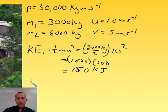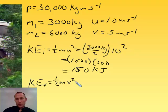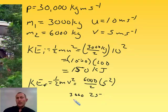Now let's compare that to the final kinetic energy. Same equation except here we have a new mass and a new velocity. And so now our mass is 6,000 and our velocity is 5. And so we're going to get 3,000 times 25. And our kinetic energy here is going to actually then be 75 kilojoules.